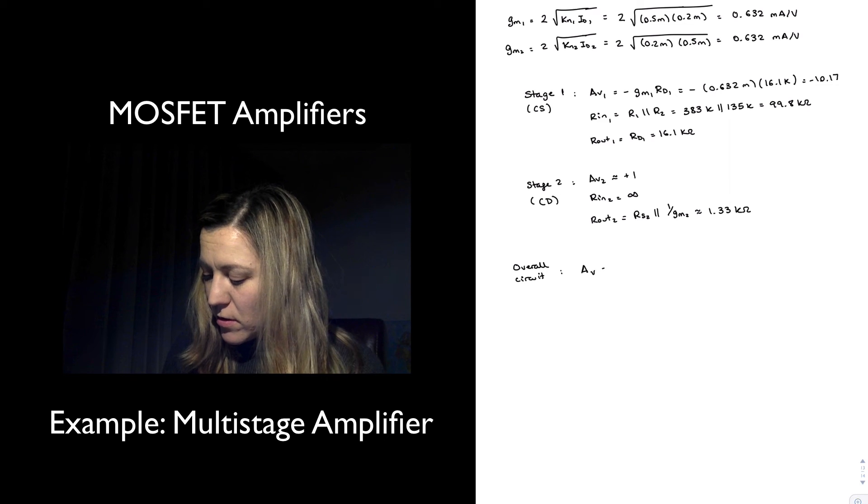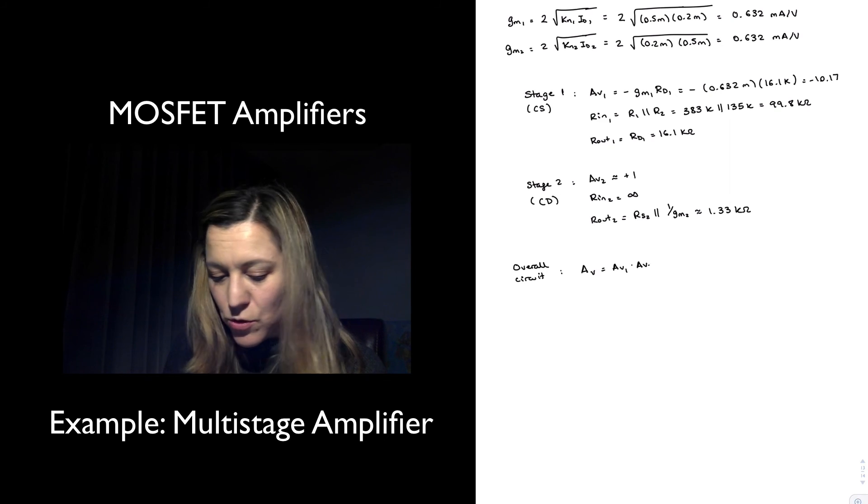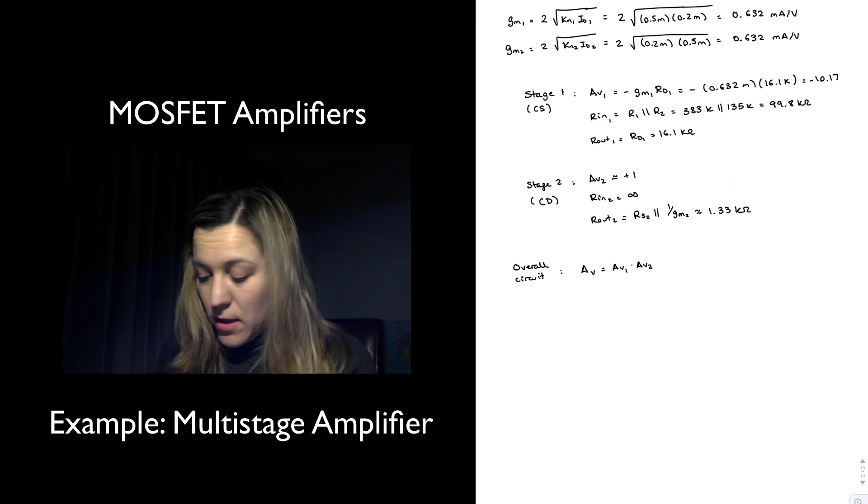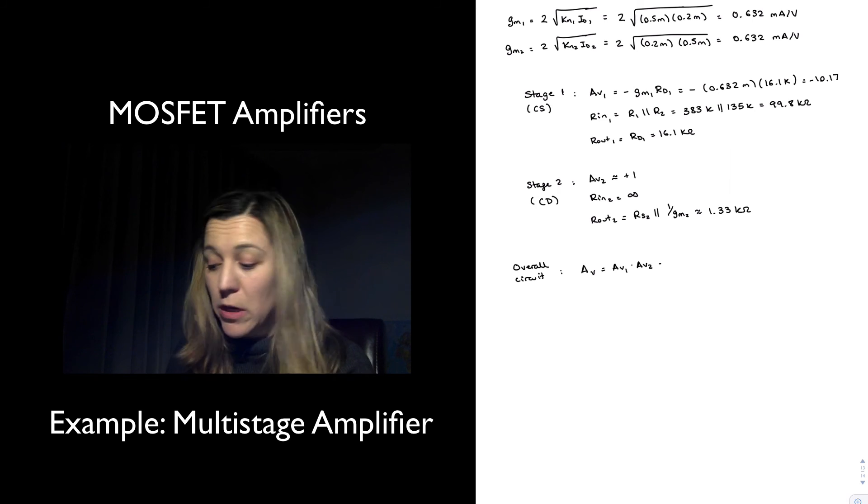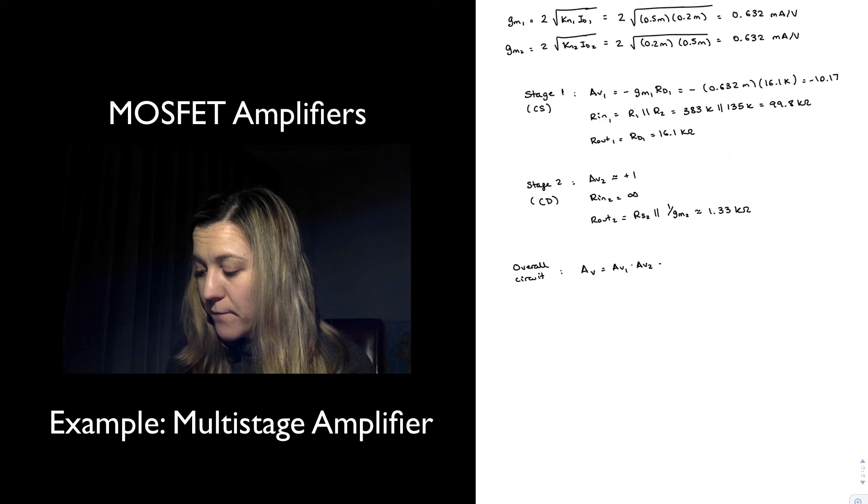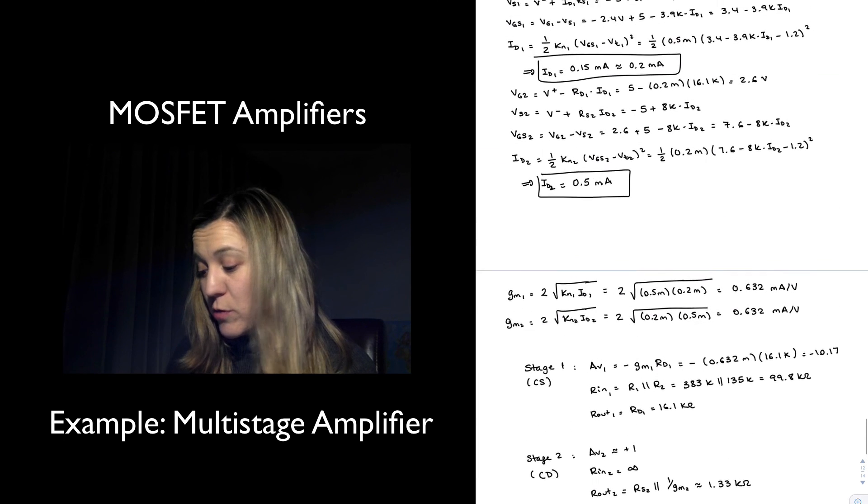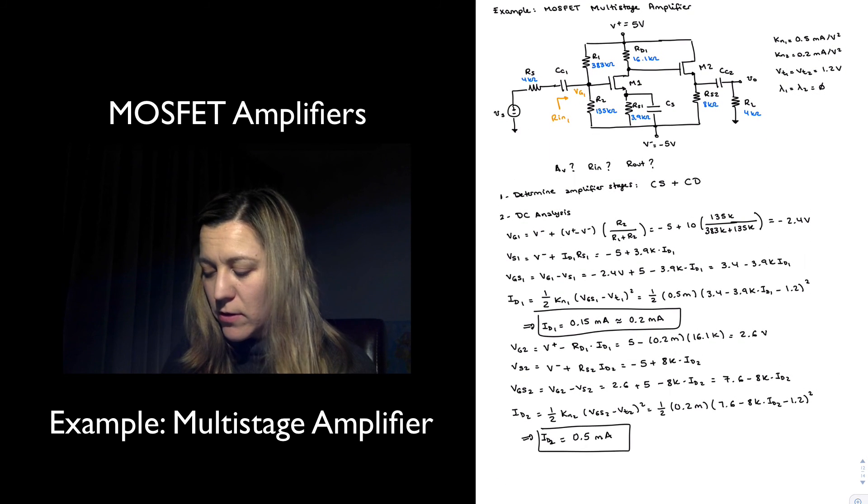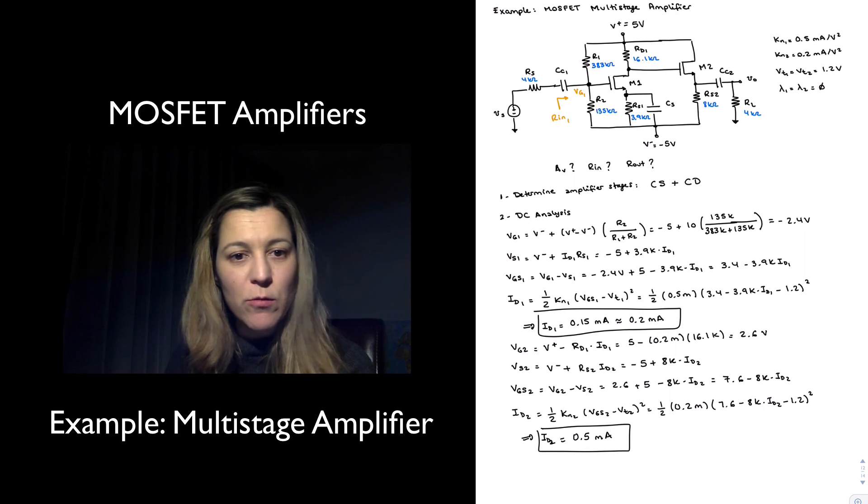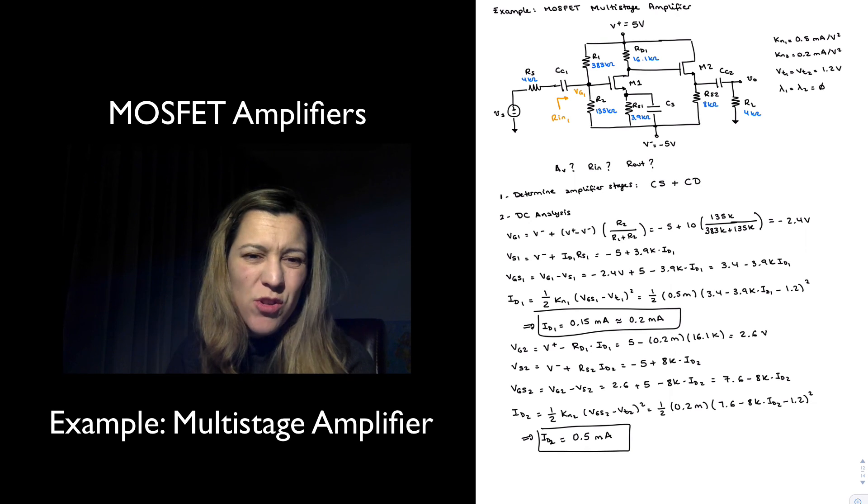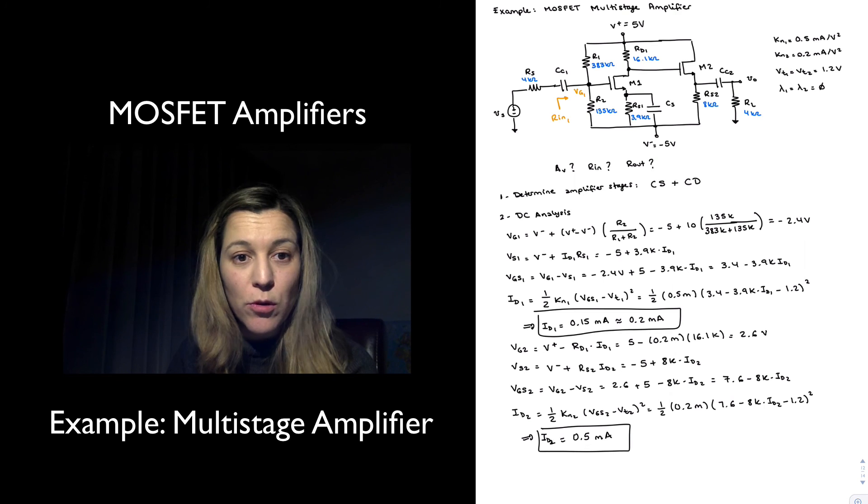My overall gain is going to be AV1 times AV2. If I want to keep into consideration my loading factors, then I will have to basically have the possibility of three loading factors if I go back to my circuit. That is the loading between RS, which is 4k ohms, and the input resistance of the first stage, which we just calculated was around 100k ohms. Therefore, there isn't going to be much loading there; I'm just going to ignore that input loading factor.